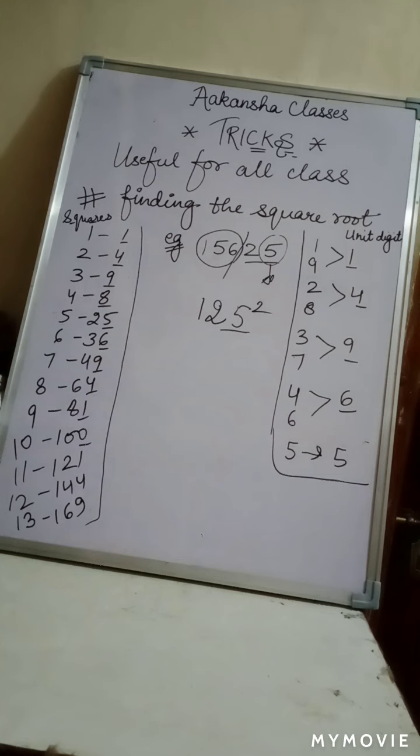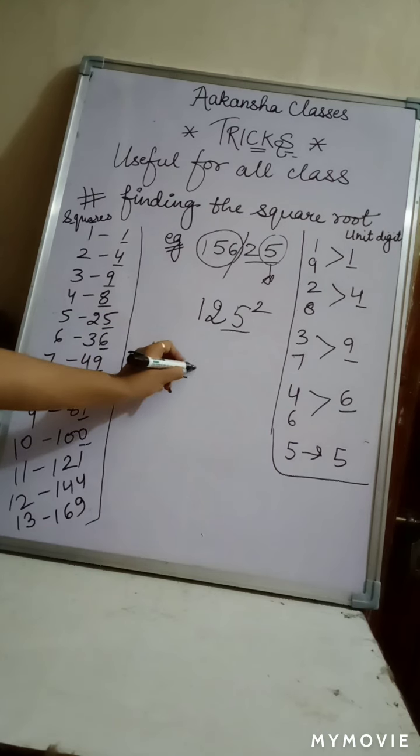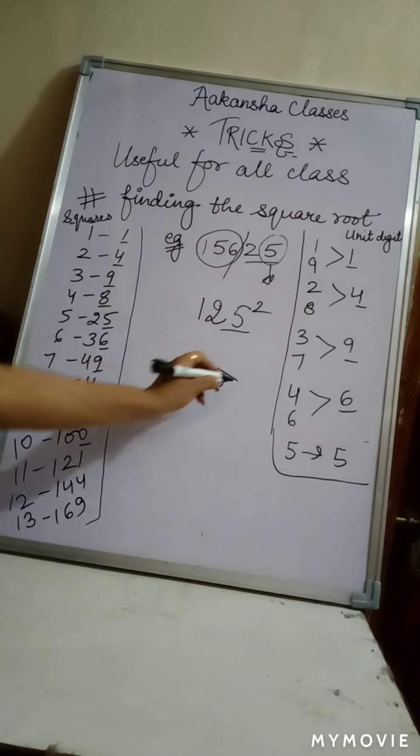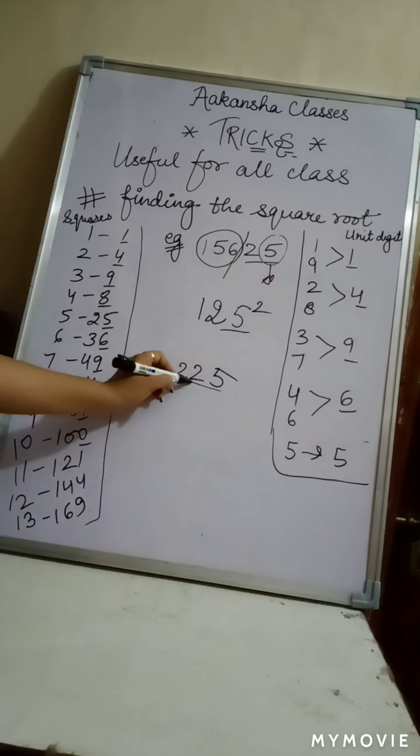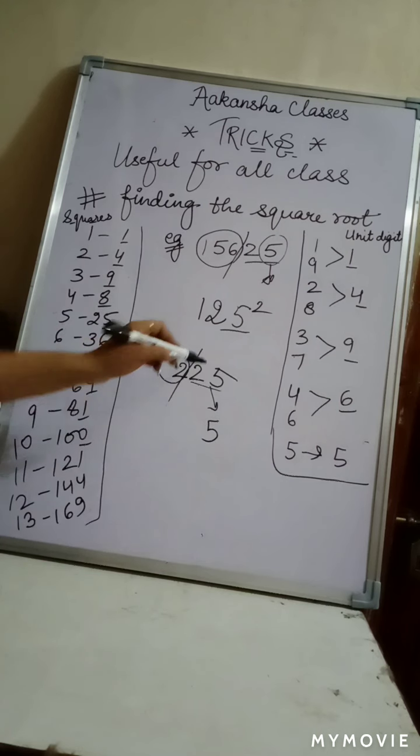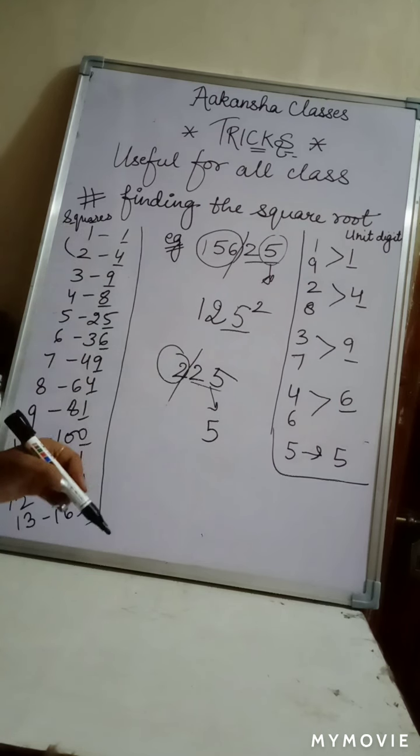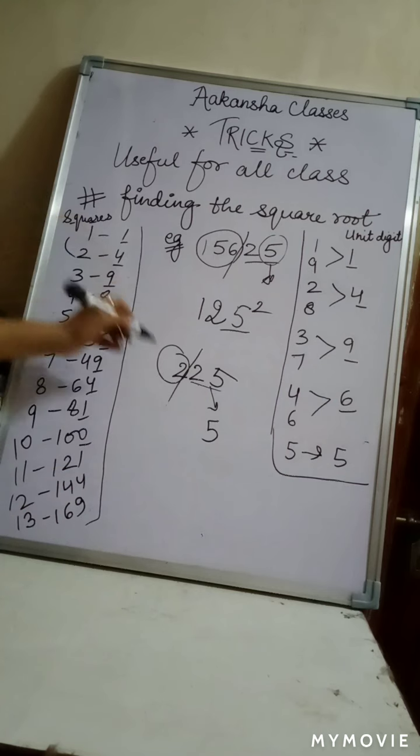Let's take another example, 225. Again, look, our step is always the same. The last 2 digits, then we have to break the number. After that, 5. So 5 will be the unit digit. Now this is 2. Which square is 1 or 2? So the small value, you can see here, this is 15 square.